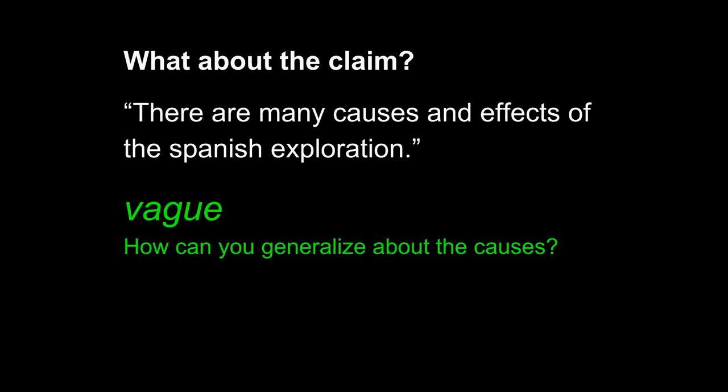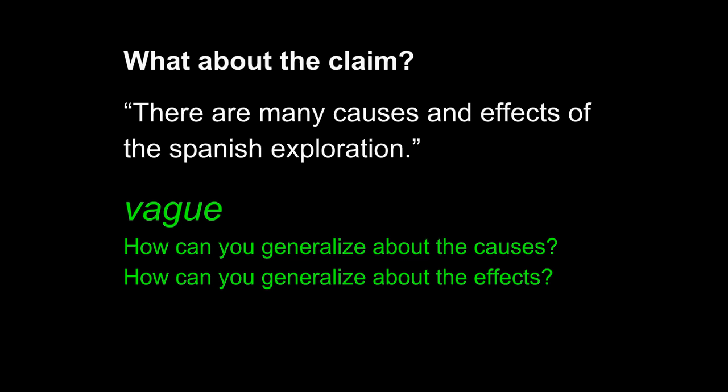Ask yourself: how can you generalize about the causes? I know many different causes exist, but how can you generalize — what do they all have in common? Or consider: how can you generalize about the effects? What do all the effects seem to have in common? This may actually lead to a two-part answer with causes and effects, possibly two claims, possibly two paragraphs. However, it's vitally important that you generalize about the causes and effects — basically, that you add content. You cannot simply rewrite the prompt vaguely into a topic sentence claim. You must add content.